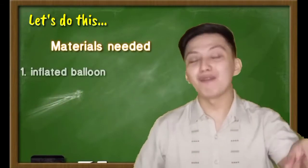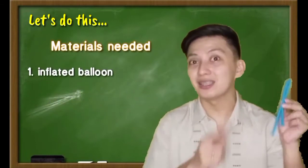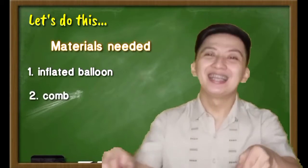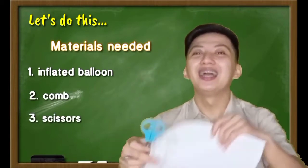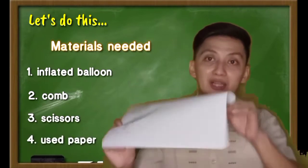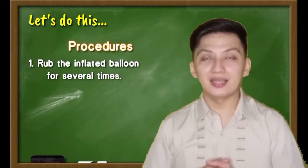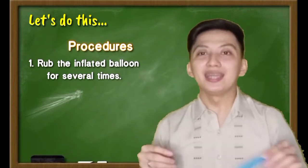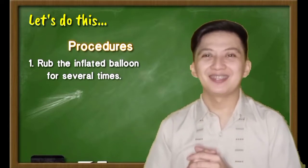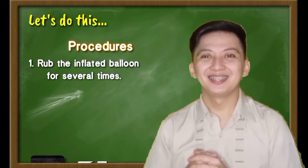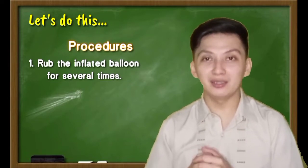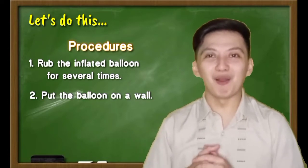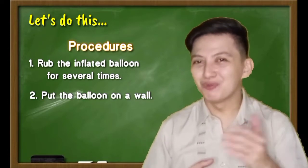These are all the materials needed. You need a piece of balloon — be sure it is inflated. Then a comb, scissors, and a piece of paper, preferably a scratch paper. For procedure number one, using the inflated balloon, rub it on your hair for several times. After rubbing it on your hair, put the rubbed balloon near to a wall, and observe what happens.